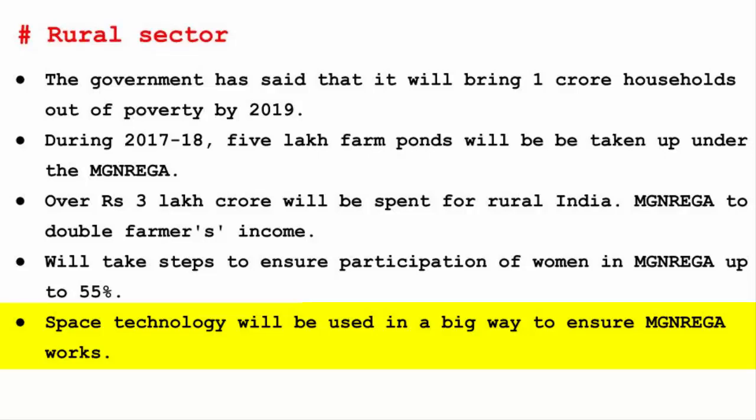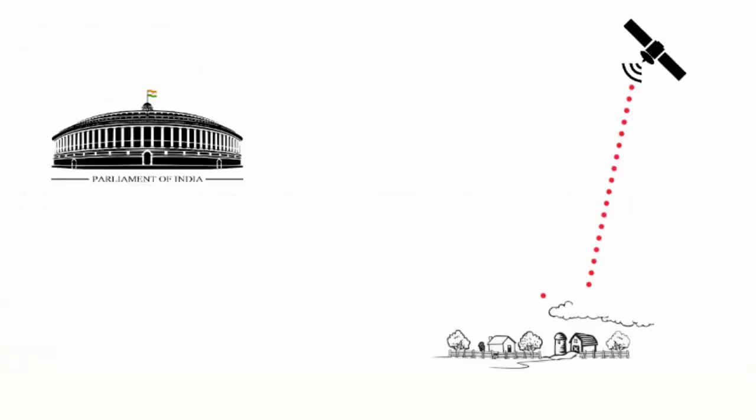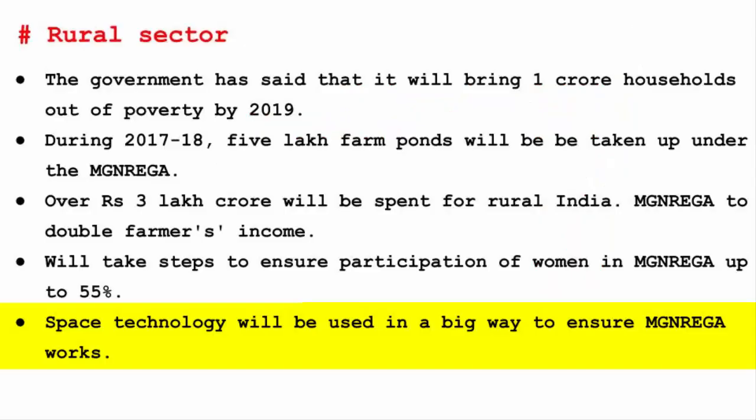MGNREGA has always been under the scanner for large-scale corruption and huge leakages. To address this, the government will make use of geotagging — a space technology using satellites — to track geographical locations and attach them to data such as photos, SMS messages, and QR codes. This system will enable monitoring the flow of money for the scheme through a centralized electronic fund management system, using technology to avoid leakages.